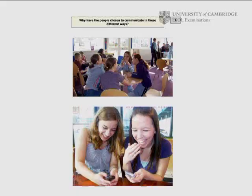In this part of the test, I'm going to give each of you two photographs. I'd like you to talk about your photographs on your own for about a minute, and also to answer a short question about your partner's photographs. Otavia, it's your turn first. Here are your photographs. They show people communicating in different ways. I'd like you to compare the photographs and say why you think the people have chosen to communicate in these different ways.